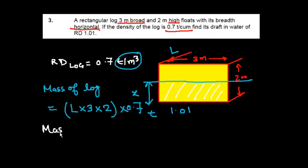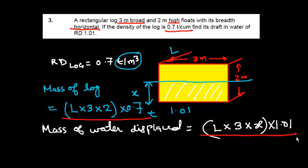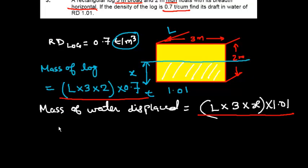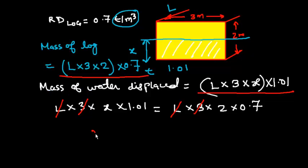The underwater volume gives us the mass of water displaced, which equals L × 3 × X × 1.01. As per the law of flotation, mass of log equals mass of water displaced. Equating both: L × 3 × X × 1.01 = L × 3 × 2 × 0.7. We can cancel L and 3 from both sides.